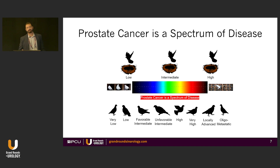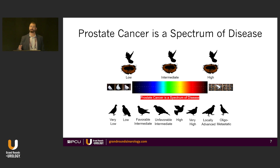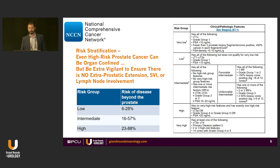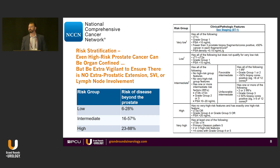Prostate cancer is a spectrum of disease. It's fluid, it's dynamic. But we want to pigeonhole everything so we have ways to talk about how we're going to treat, so we can talk to other physicians. The NCCN shows these different risk categories, which is good — it helps us know when we need to dose-intensify and what we need to do.